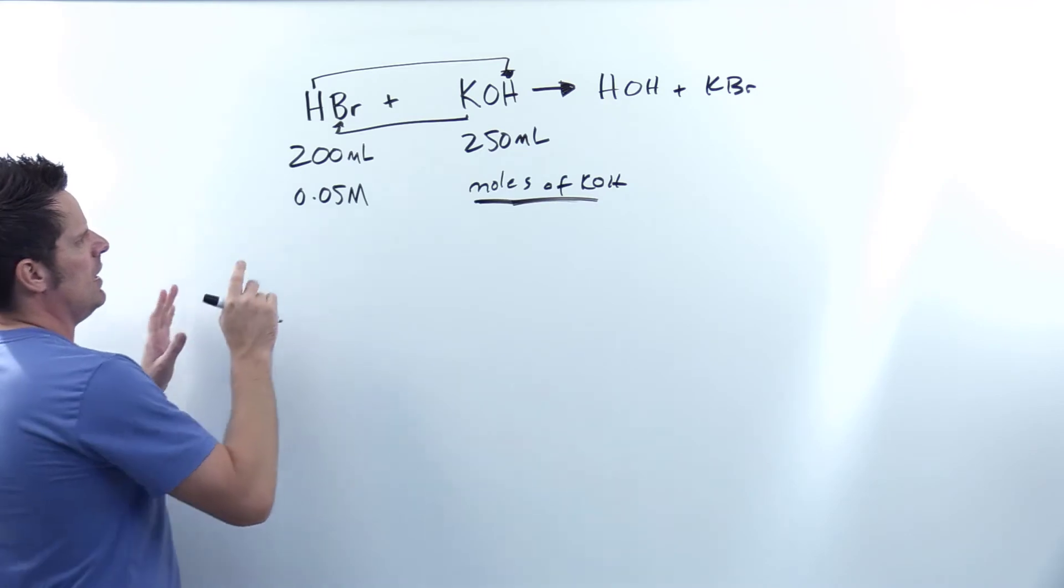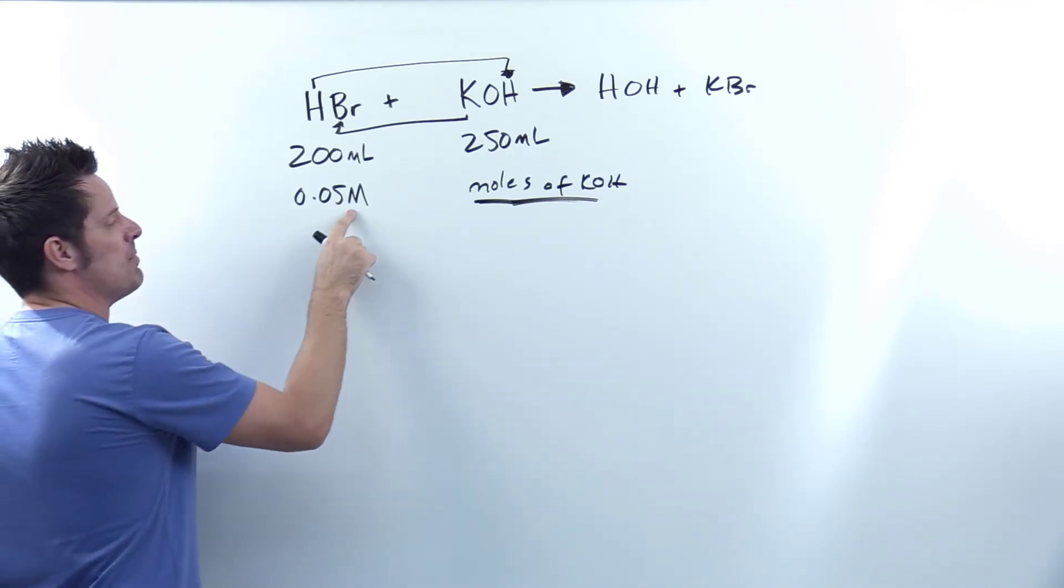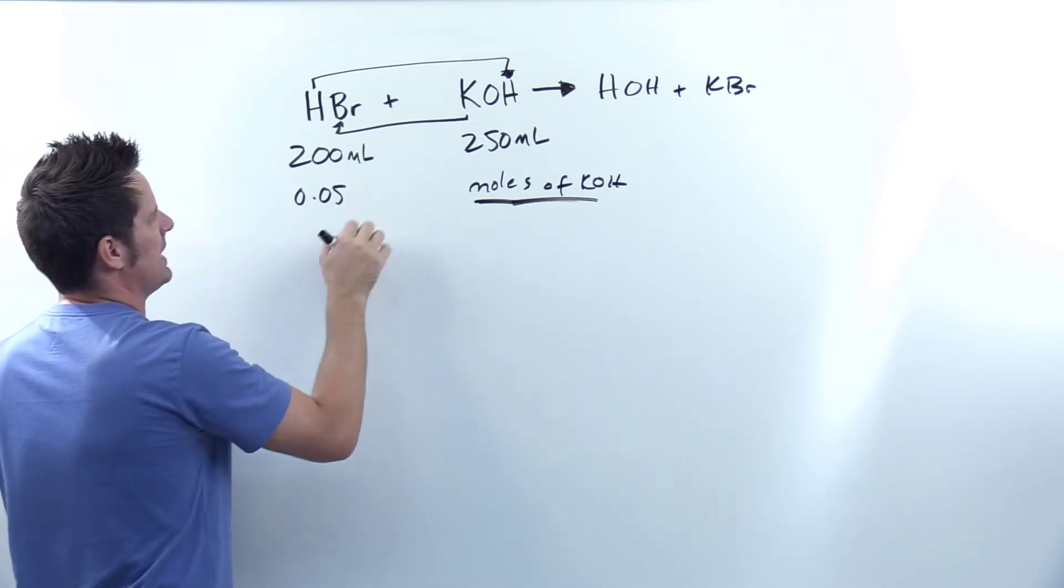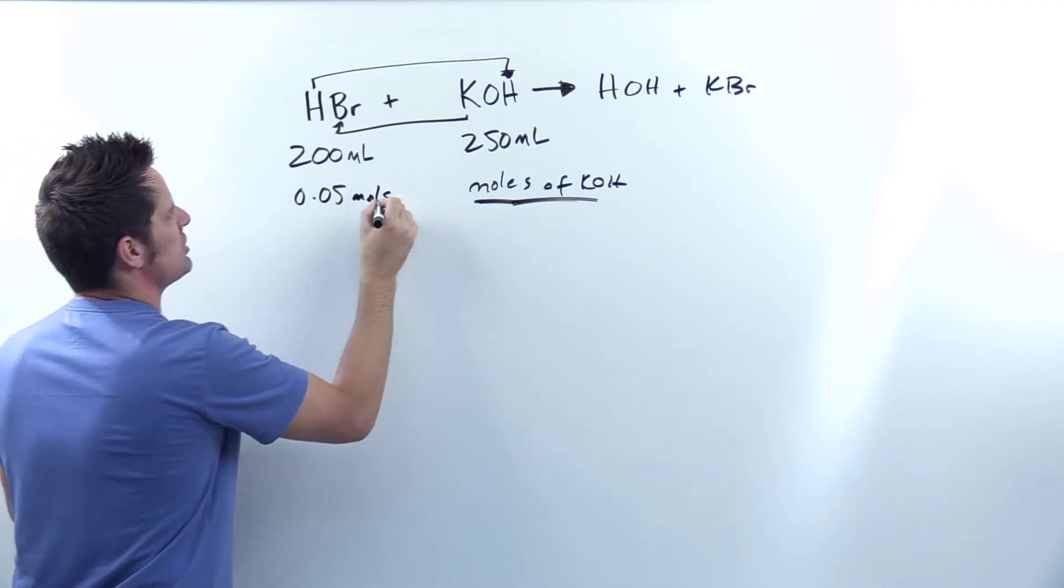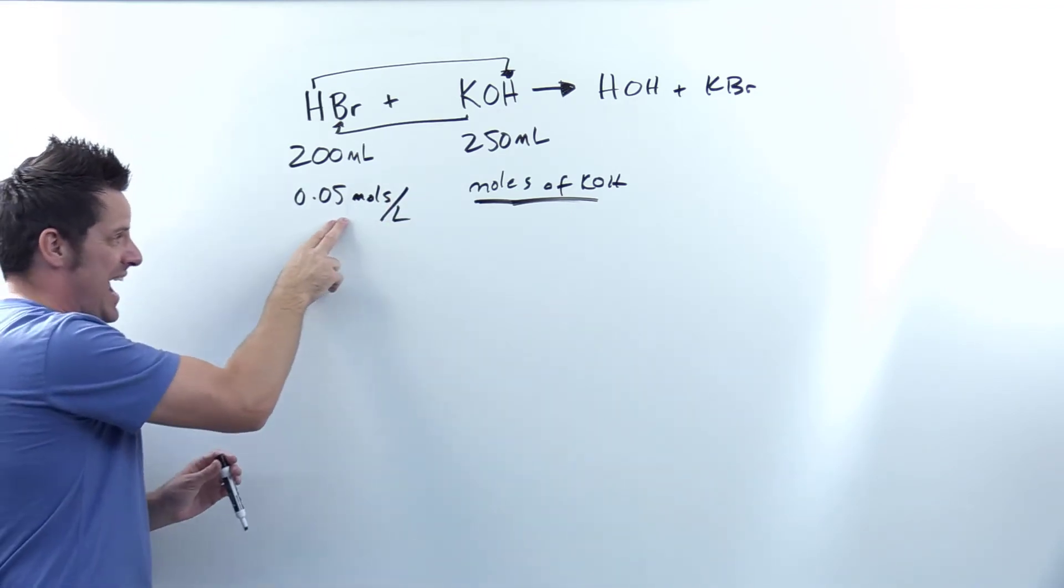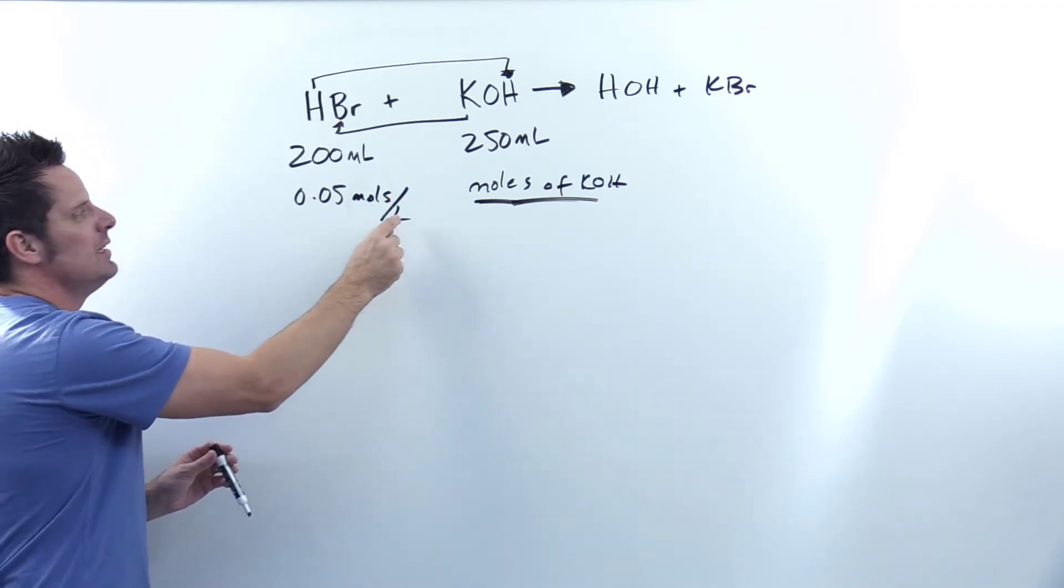So how do I do that here? Well, you need to remember that molarity or this capital M stands for molarity, which is really the same thing as moles of this specific compound HBr per liter of solution. So this has denominator units. It's per liter.